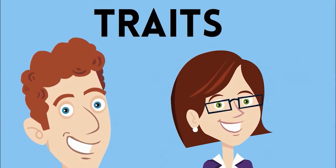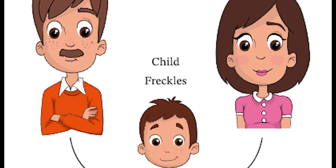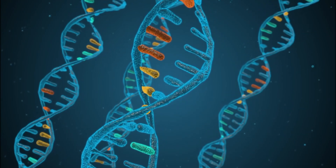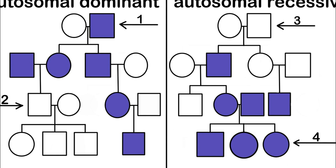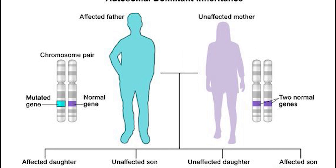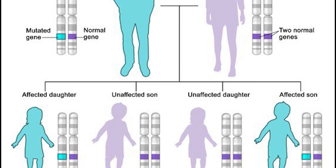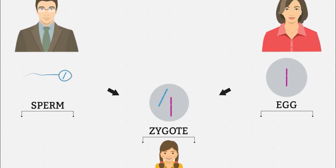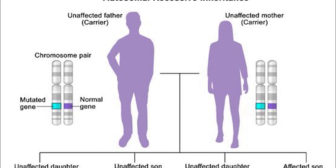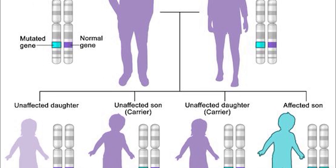Inheritance of traits refers to the process by which characteristics or traits are passed from one generation to the next, determined by the genes present in an individual's DNA. There are two main modes of inheritance: autosomal dominant and autosomal recessive. In autosomal dominant inheritance, a single copy of a gene is sufficient to express a particular trait, meaning that if an individual inherits a dominant gene from one parent, they will express that trait. In autosomal recessive inheritance, both copies of a gene must be the mutant form for the trait to be expressed.